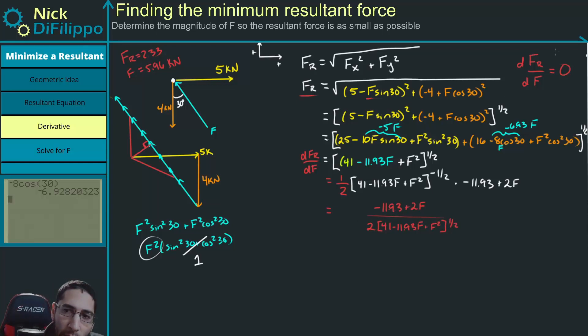So now we want to set the derivative equal to zero. And at this point, we can solve for what F is, right? Everything in the denominator right now when we multiply by zero just goes away. Okay, so we get zero is equal to minus 11.93 plus 2F, solve for F.